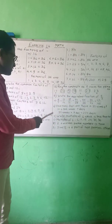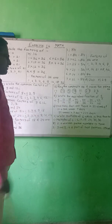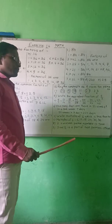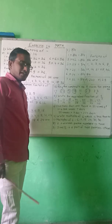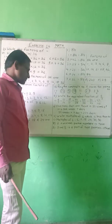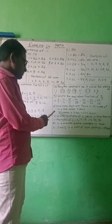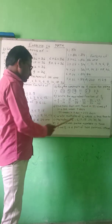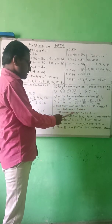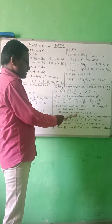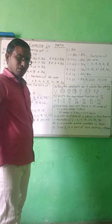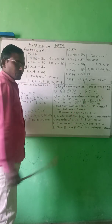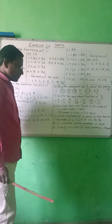How many days are there in 32 weeks? First, understand: in one week, there are 7 days. So 32 weeks multiplied by 7 days is equal to 224 days.